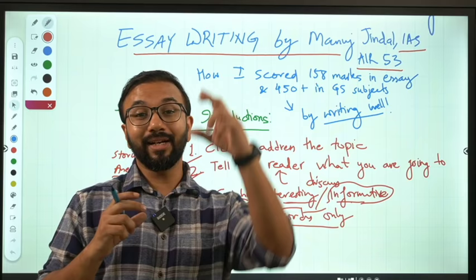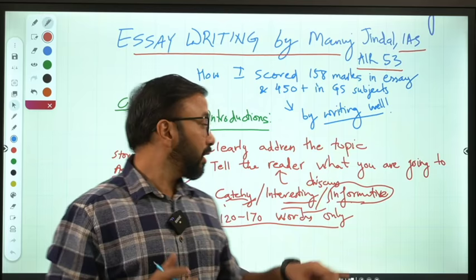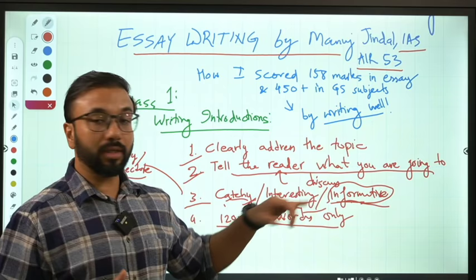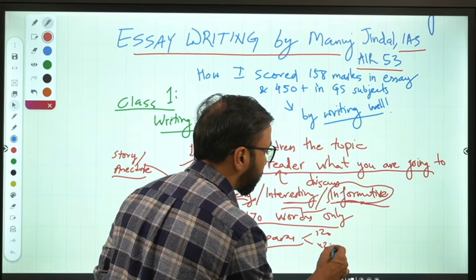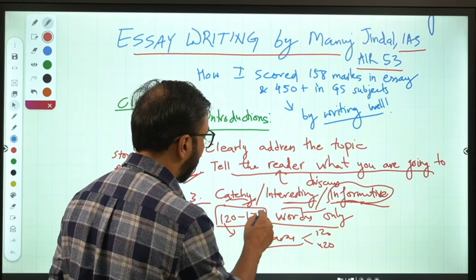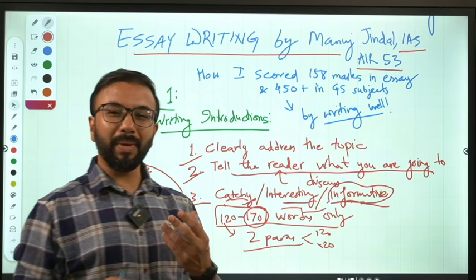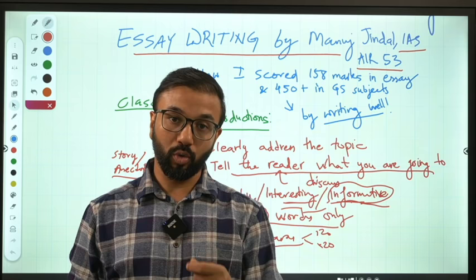The fourth basic point: don't make the introduction very long — keep it short. An introduction can even be two paragraphs. In the first paragraph there can be a short story, anecdote, or interesting fact. In the second paragraph you can create the opening remark about what you'll discuss. One paragraph should not be more than 120 words. If writing one introduction paragraph, don't write more than 170 words — that is the best word limit to stick to.